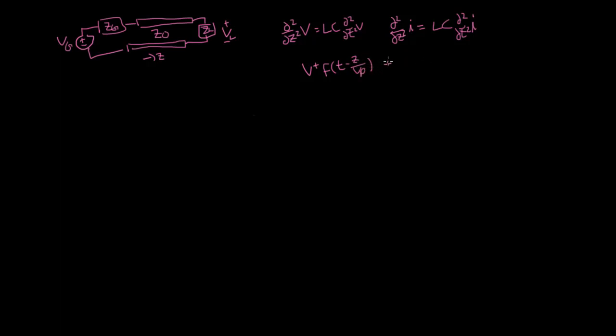And backward propagating wave, v minus to signify the backward propagating wave at velocity vp. We can define that a general solution would take this form where you have a forward wave and a backward wave.